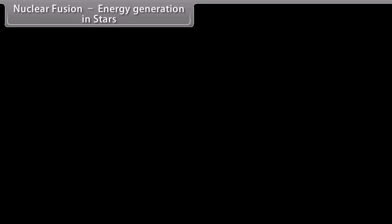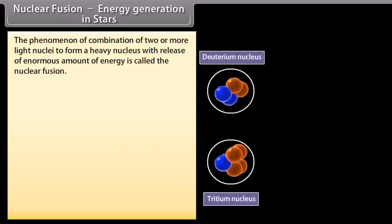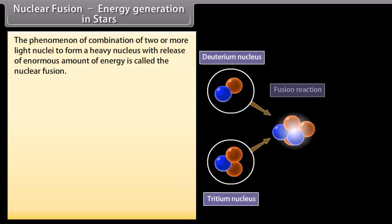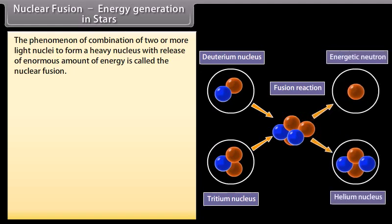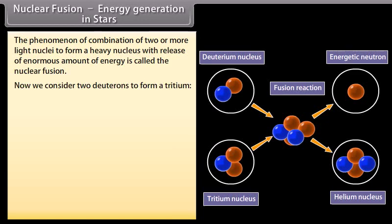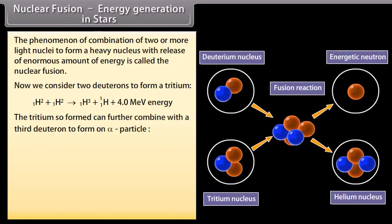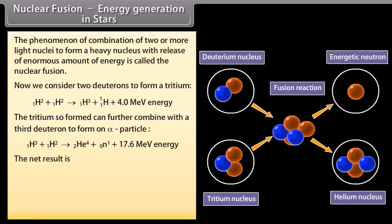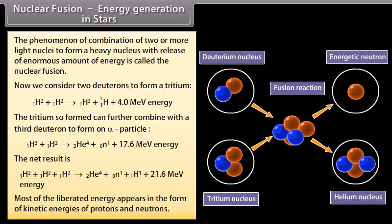Nuclear fusion. Energy generation in stars: the phenomenon of combination of two or more light nuclei to form a heavy nucleus with release of enormous amount of energy is called the nuclear fusion. Now we consider two deutrons to form a tritium. The tritium so formed can further combine with the third neutron to form an alpha particle. The net result is... Most of the liberated energy appears in the form of kinetic energies of protons and neutrons.